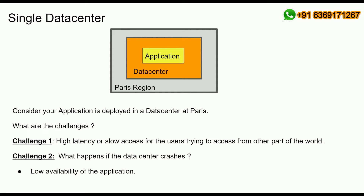Challenge number one: as the application is deployed at a data center in the Paris region, there would be high latency or slow access for users trying to access that application from other parts of the world — say, from Australia, New York, or Singapore. However, the application will still be available, and users near Paris would experience much better response times. So challenge number one is high latency for people accessing from other parts of the world.